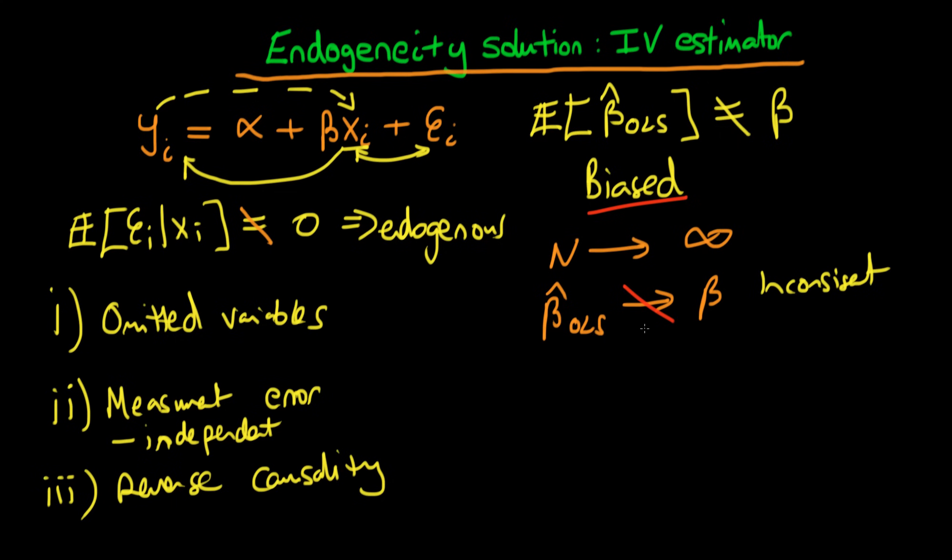Okay, so those are some of the problems with trying to estimate our model using OLS. Namely, the estimates which we get from our OLS estimator will be incorrect—they won't be centered around the true population parameter. They'll be biased, and also as our sample size increases indefinitely towards the population size, we don't have a convergence of our estimates towards the true value either. But what's the logic behind why we do have this issue?